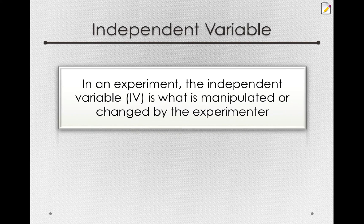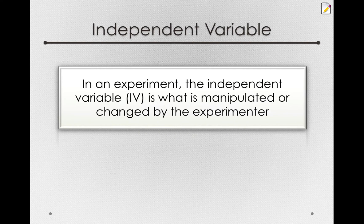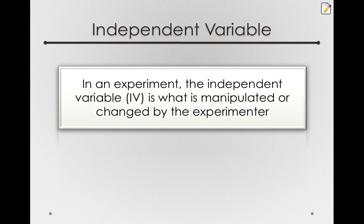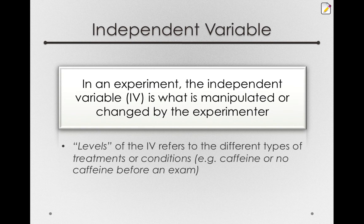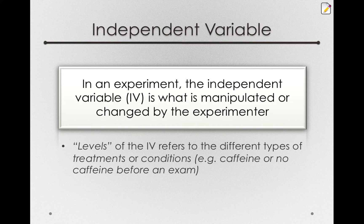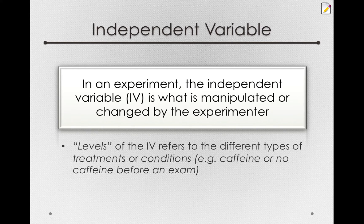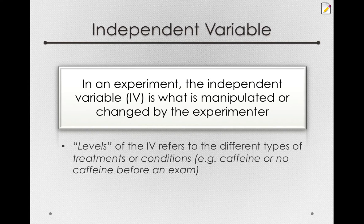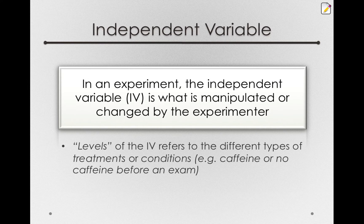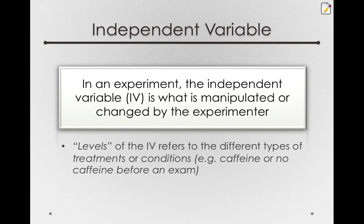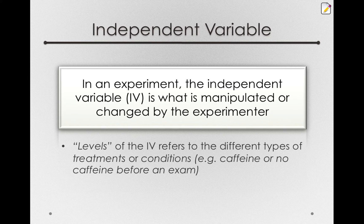The independent variable in an experiment is the variable that is manipulated or changed by the experimenter. When we talk about independent variables, we'll usually talk about the levels of the independent variable, which refers to the different types of treatments or conditions that individuals experience. For instance, in the experiment when we were looking at caffeine versus no caffeine before an exam, caffeine level is the levels of the independent variable - caffeine or no caffeine.